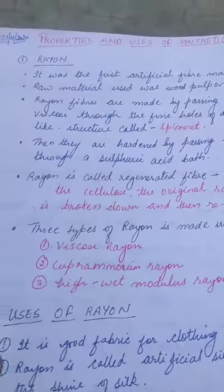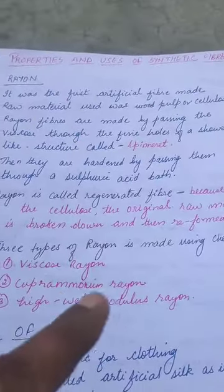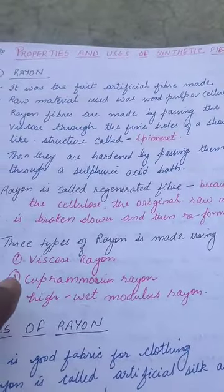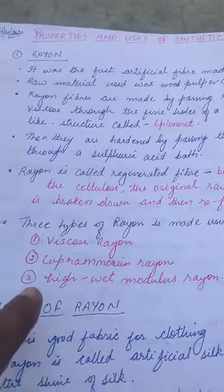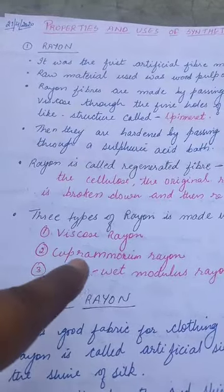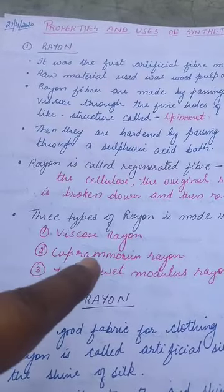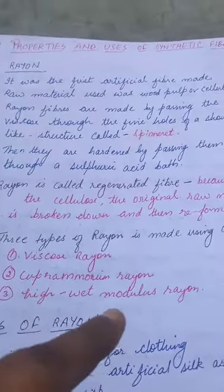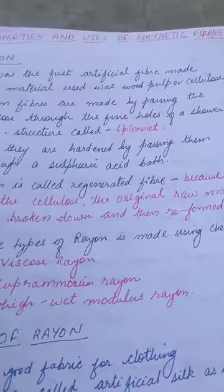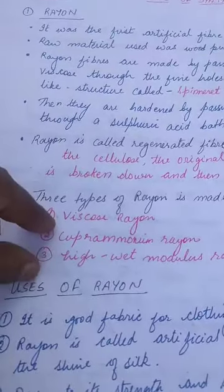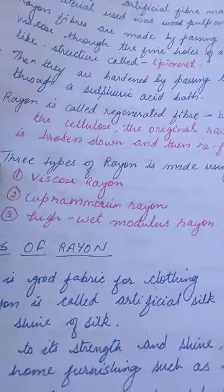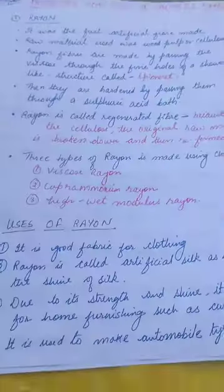The three types of Rayon are: viscose Rayon, cupramonium Rayon, and high-wet modulus Rayon. These are the three qualities of Rayon available.